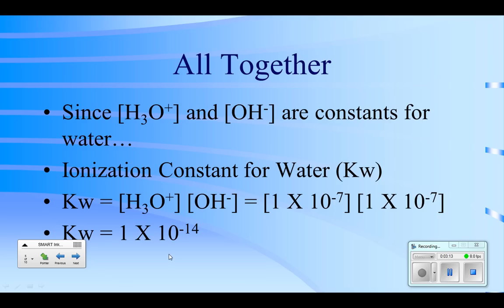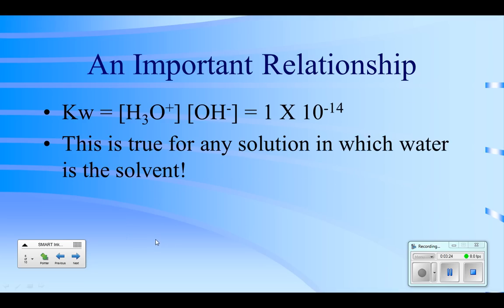Now I'm leaving out some details here. For example, this depends on temperature, but we're not going to worry about that too much. So Kw is the hydronium times the hydroxide concentration, and its value is 1 × 10^-14.